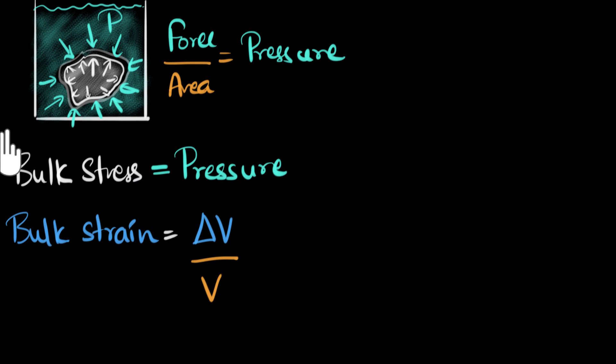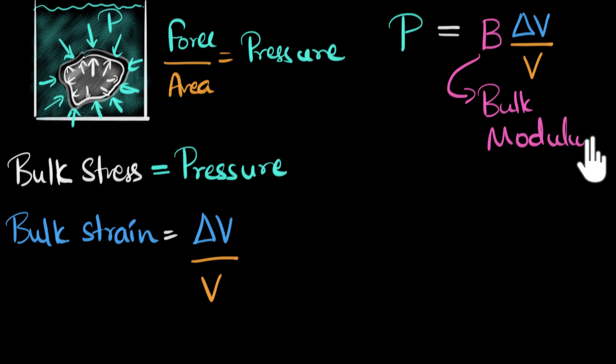Hooke's law says that the bulk stress, which is the same as pressure, is proportional to bulk strain. And we can now get rid of this proportionality, and we'll say it's equal to, and we're going to put a constant over here, and that constant is the modulus of elasticity. And the modulus of elasticity over here is called B, the bulk modulus. And notice, since under pressure, the volume of the stone is decreasing, the delta V is a negative number because the final volume is smaller than the initial volume. And just to represent that, usually we'll put a negative sign over here, just telling us that the volume decreases when you put this stone under pressure.